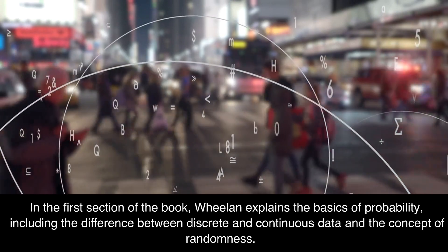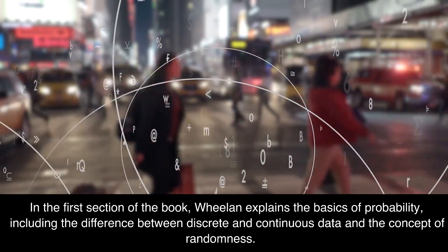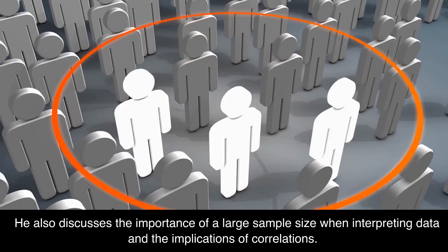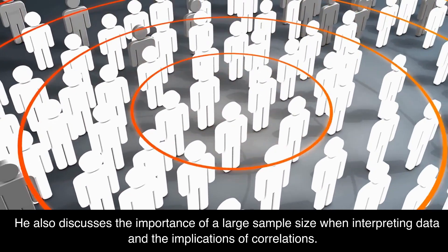In the first section, Wheelan explains the basics of probability, including the difference between discrete and continuous data and the concept of randomness. He also discusses the importance of a large sample size when interpreting data and the implications of correlations.